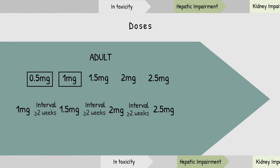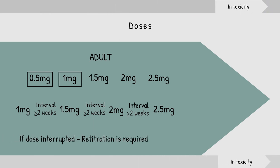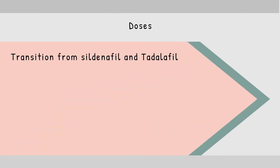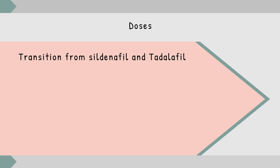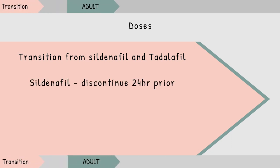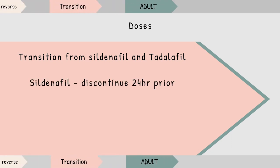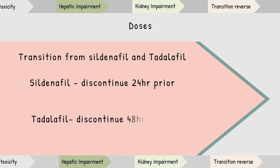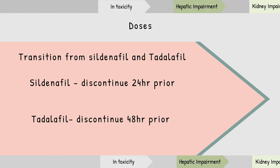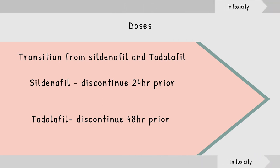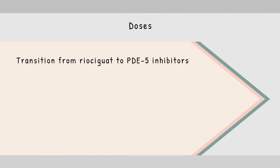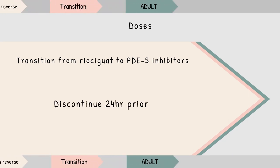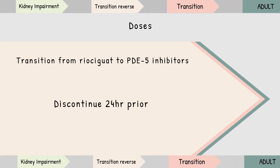If therapy is interrupted, re-titration needs to be done. If changing from Sildenafil to Riociguat, a washout period of at least 24 hours should be given. For Tadalafil, a washout period of at least 48 hours is required. In the reverse direction — from Riociguat to Sildenafil — a washout of at least 24 hours should also be given.